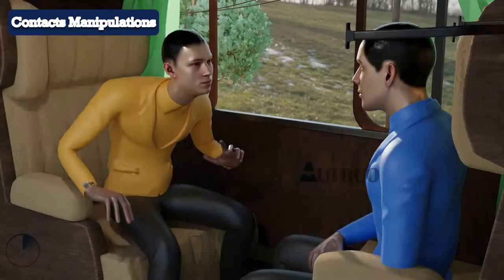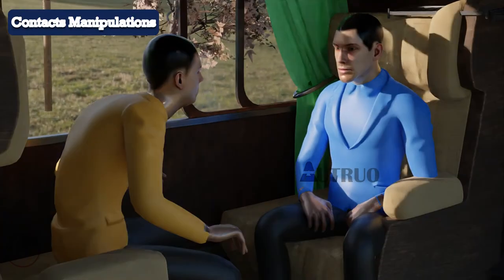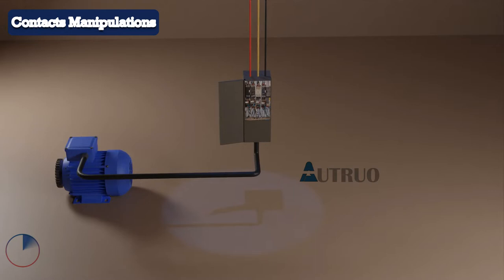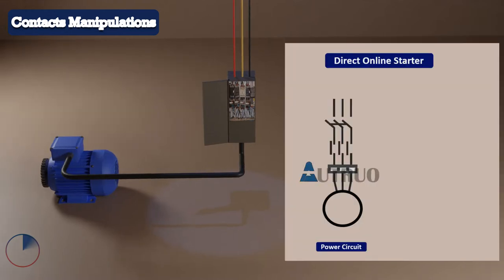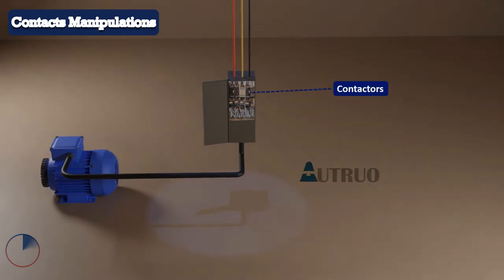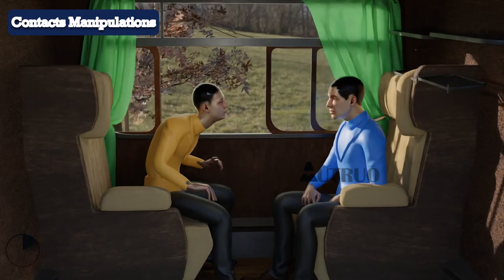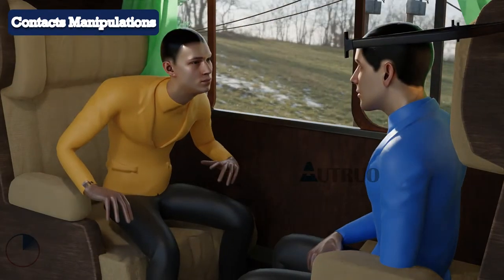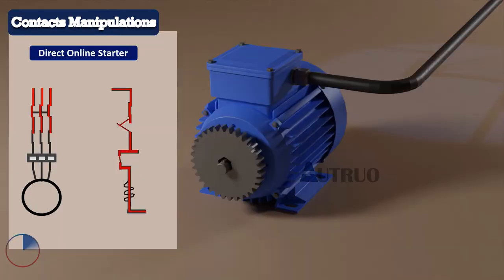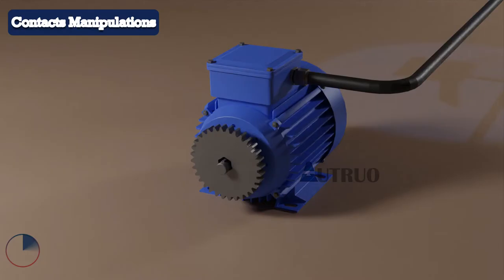Now let's make it practical. We will look at a typical direct online starter. A typical DOL has a power circuit and a control circuit. Contactors are used to control the opening and closing of the power termination to the motor at the discretion of the operator. When we push the start button, the current will flow to the contactor, it will switch position, and as a result, power will get to the motor.